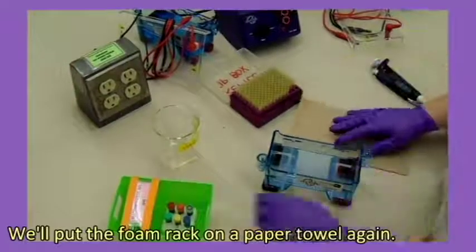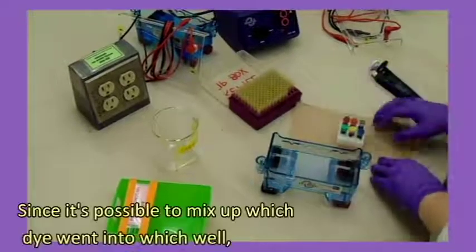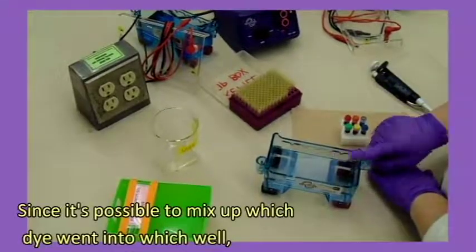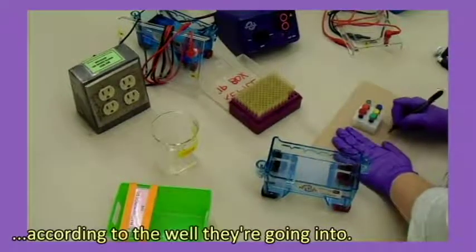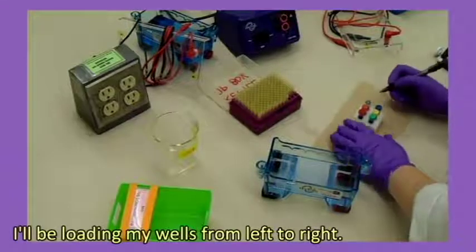We'll put the foam rack on a paper towel again. Since it's possible to mix up which dye went into which well, you might use your paper towel to label your tubes according to the well they're going into. I'll be loading my wells from left to right.